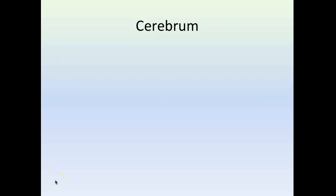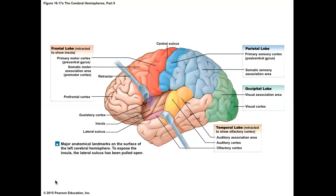We're going to talk about Roman numeral four, the brain, starting with the cerebrum. The cerebrum is the upper portion of the brain and most of our brain's mass. There are two hemispheres — the right and left — separated by a deep groove called the longitudinal fissure, and they're connected by commissural fibers.